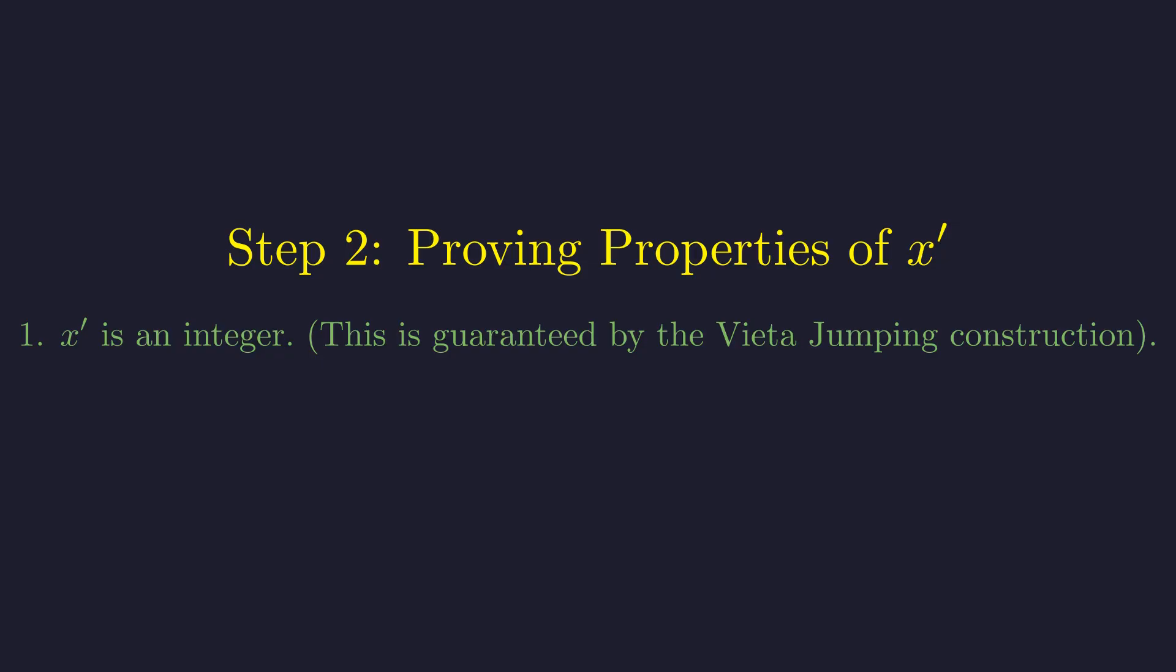Now, I need to show you three crucial facts about this x prime. First, that it's definitely an integer. Second, that it's positive. And third, that it's actually smaller than our original x. The first fact follows directly from how Vieta jumping works. The algebraic structure guarantees that if one root is an integer, so is the other.